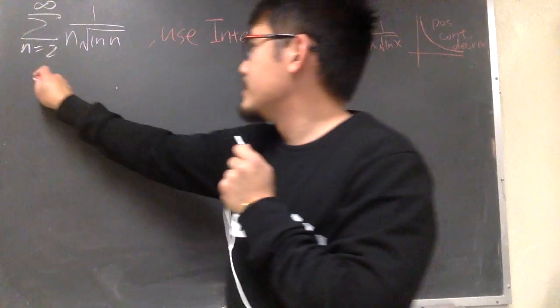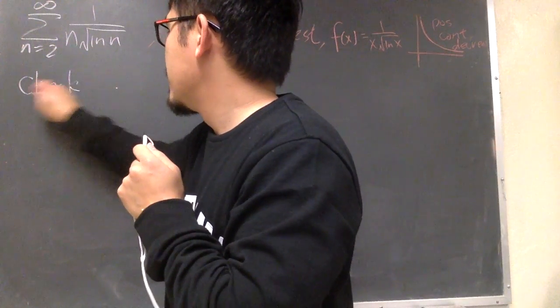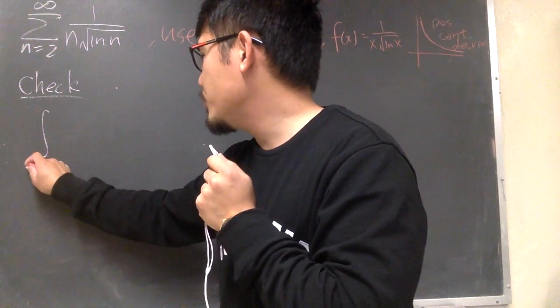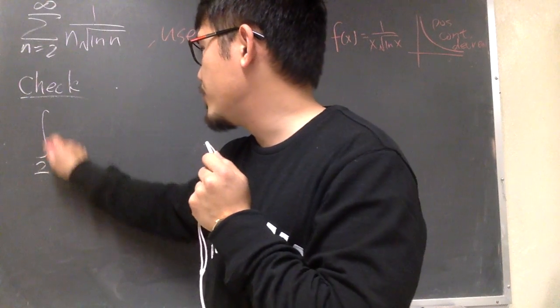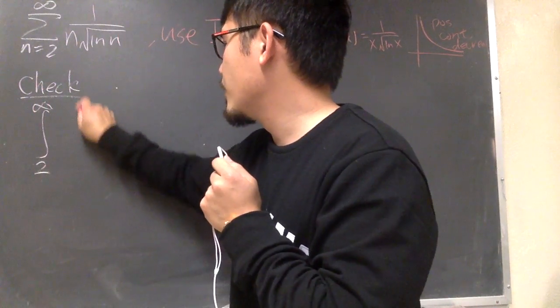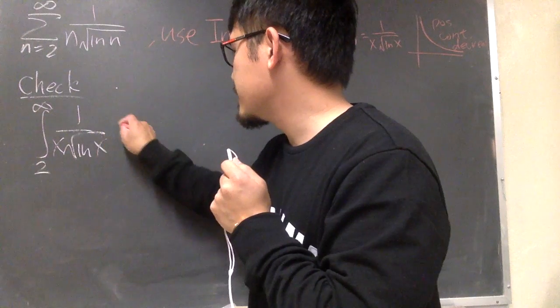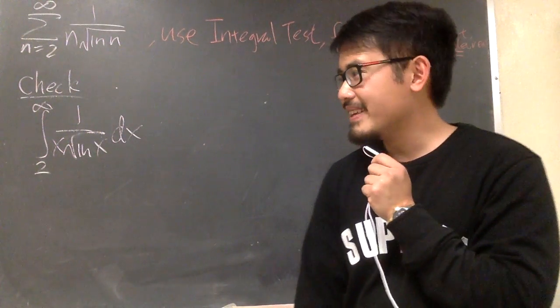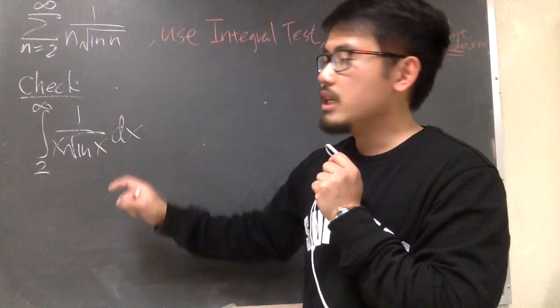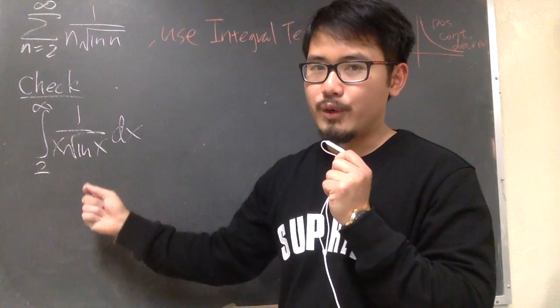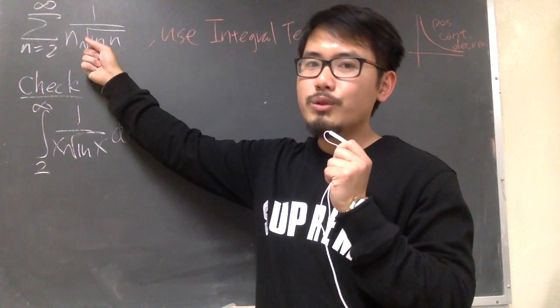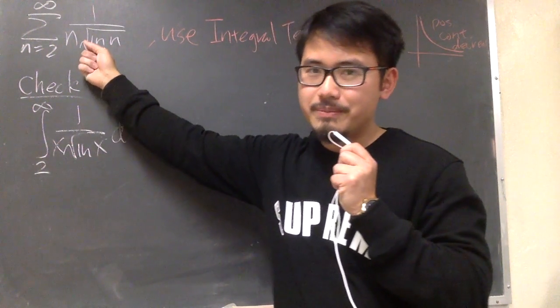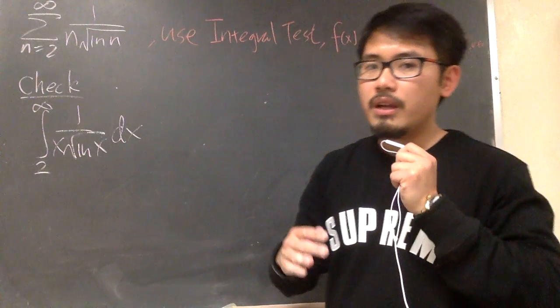Anyways, this is how it goes. I'm going to check the improper integral version of that. So let me work out the integral with you guys. From 2 to infinity, 1 over x square root of ln x. Haven't done integral for a while, right? All right. But the integral test says, if this improper integral converges, then this right here also converges. If this diverges, this also diverges.